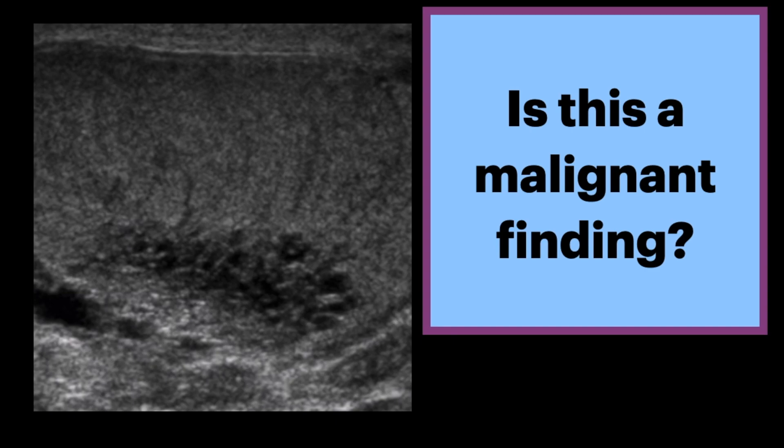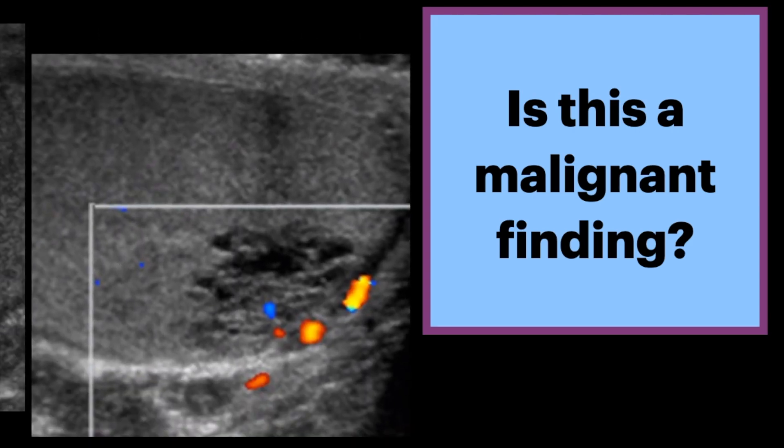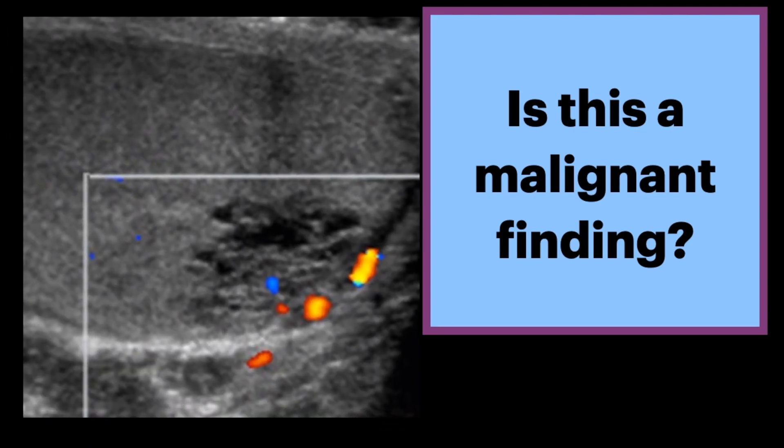On this testicular ultrasound, do we see a malignant finding? We see multiple small cystic tubular anechoic structures replacing the testicular mediastinum. The shape is geographic and there is no mass effect. This structure also lacks any significant internal vascularity.